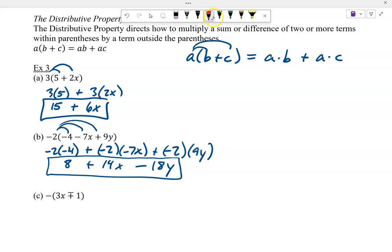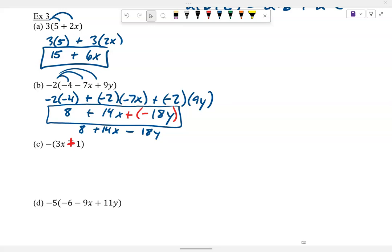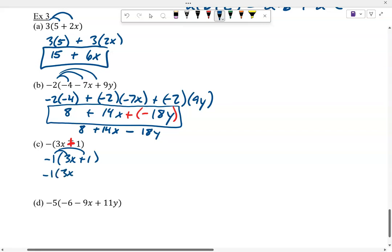This is supposed to be a plus right there. Sorry about that. And just FYI on this. You have a plus a negative 18y. So I just simplified that. A positive times a negative is a negative. So 8 plus 14x minus 18y. I just did that all at the same time on that one. So this negative is actually a negative 1. If you want to write that, that's fine. So I got negative 1 times 3x. I got a negative 1 times 1. So I got negative 3x plus a negative 1. In other words, negative 3x minus 1. Positive times negative is a minus there.